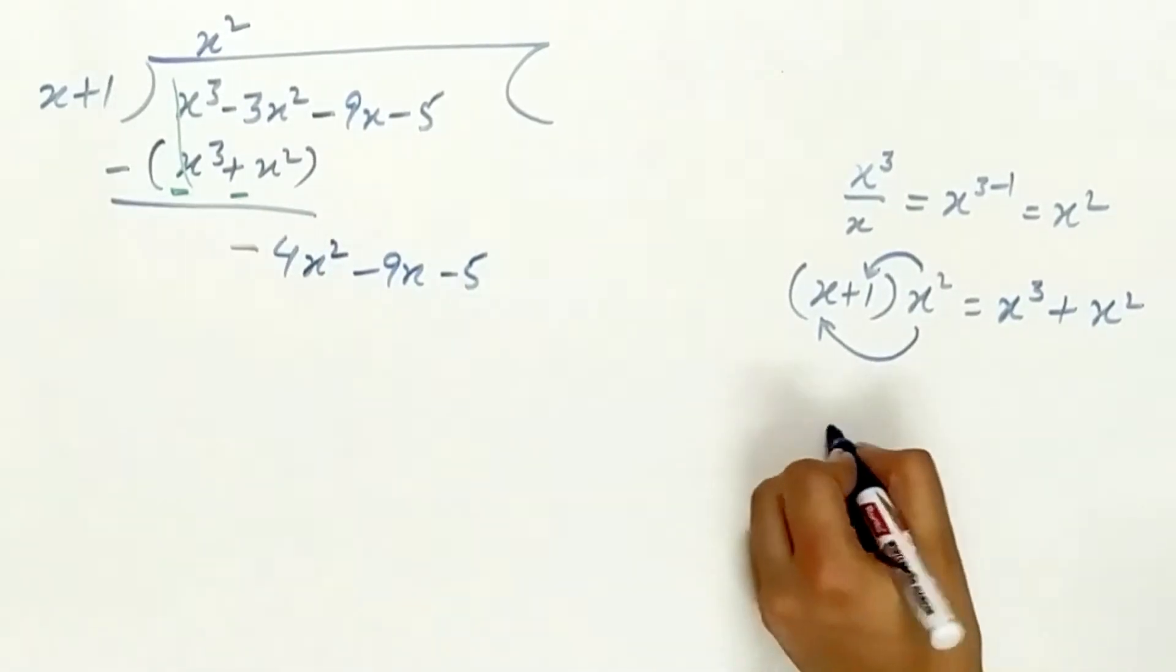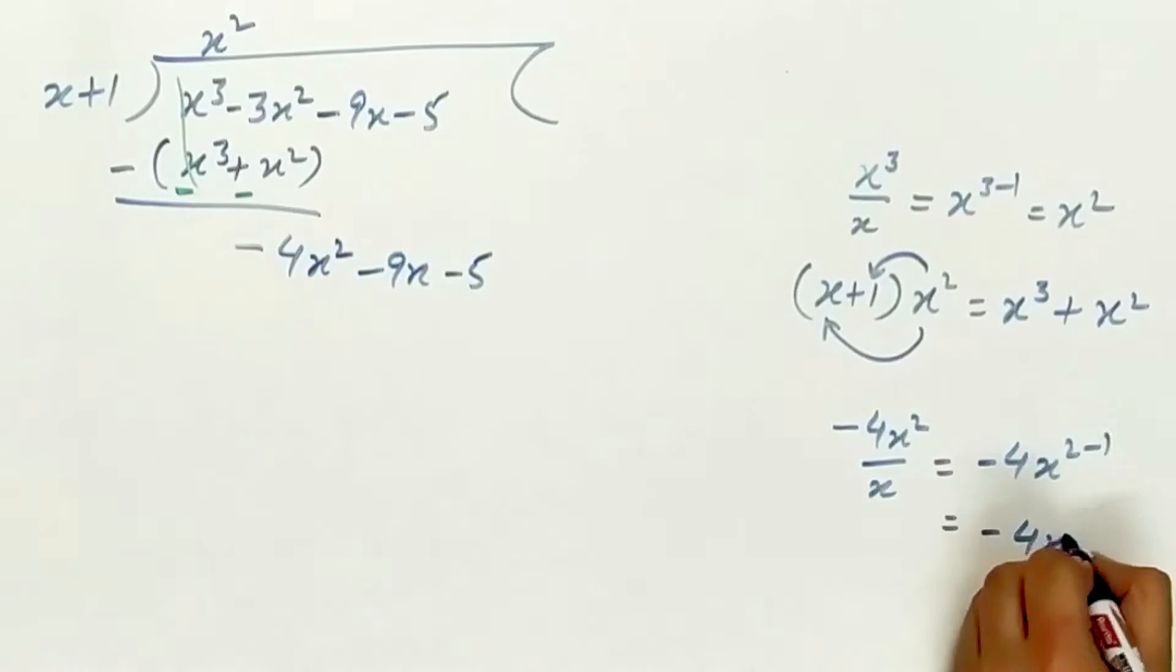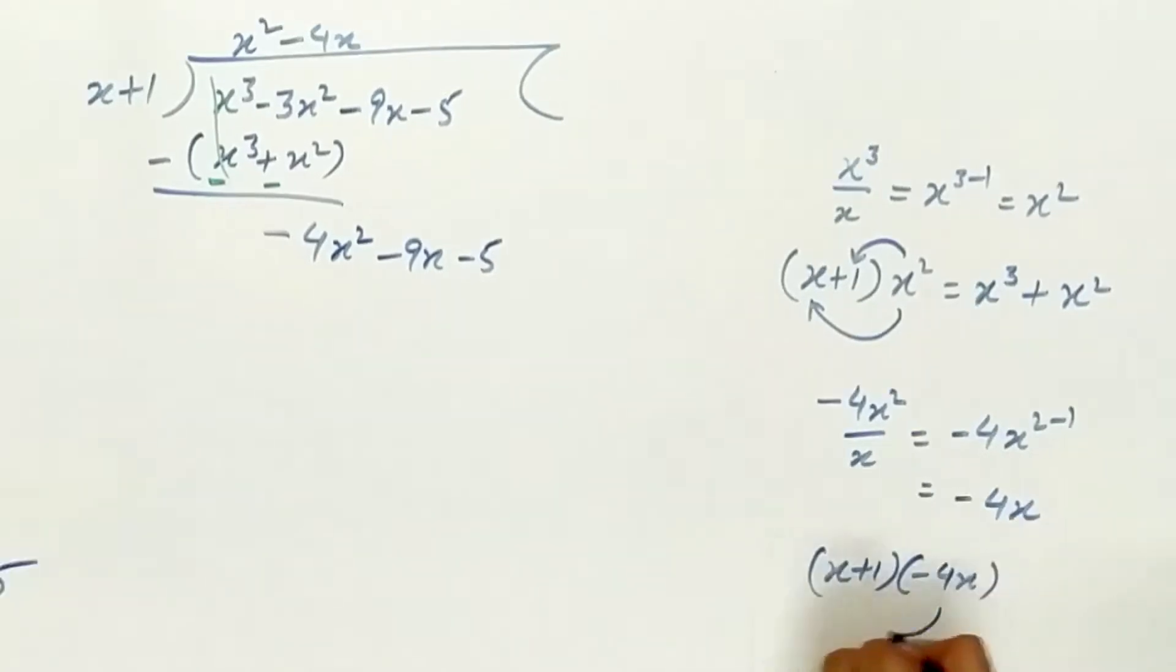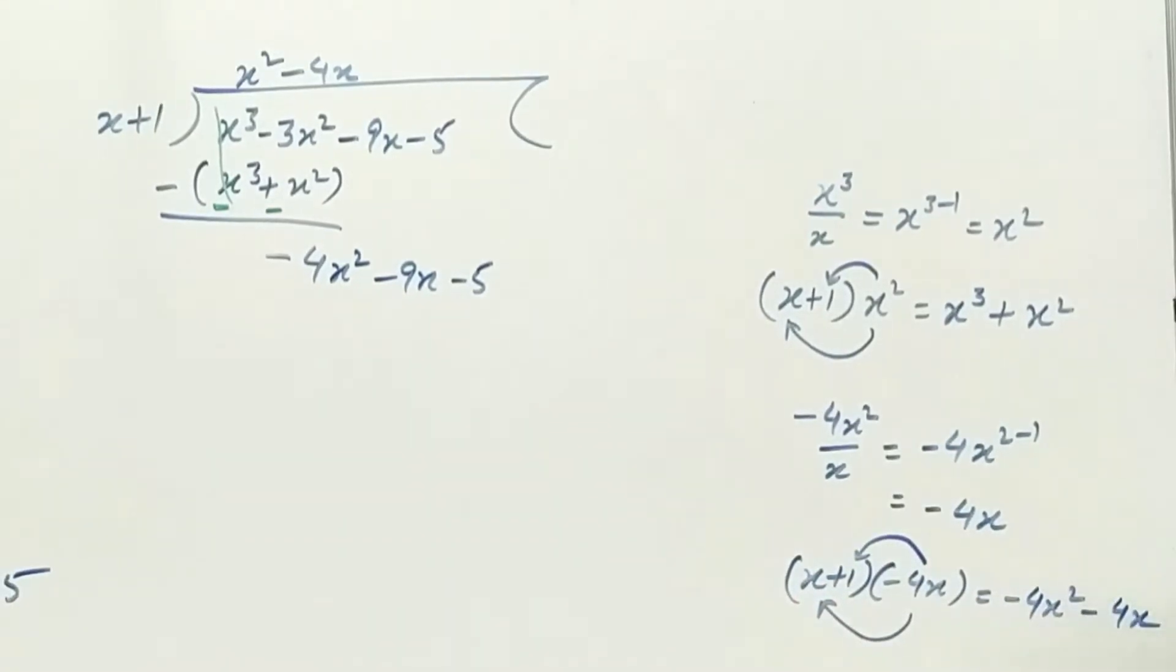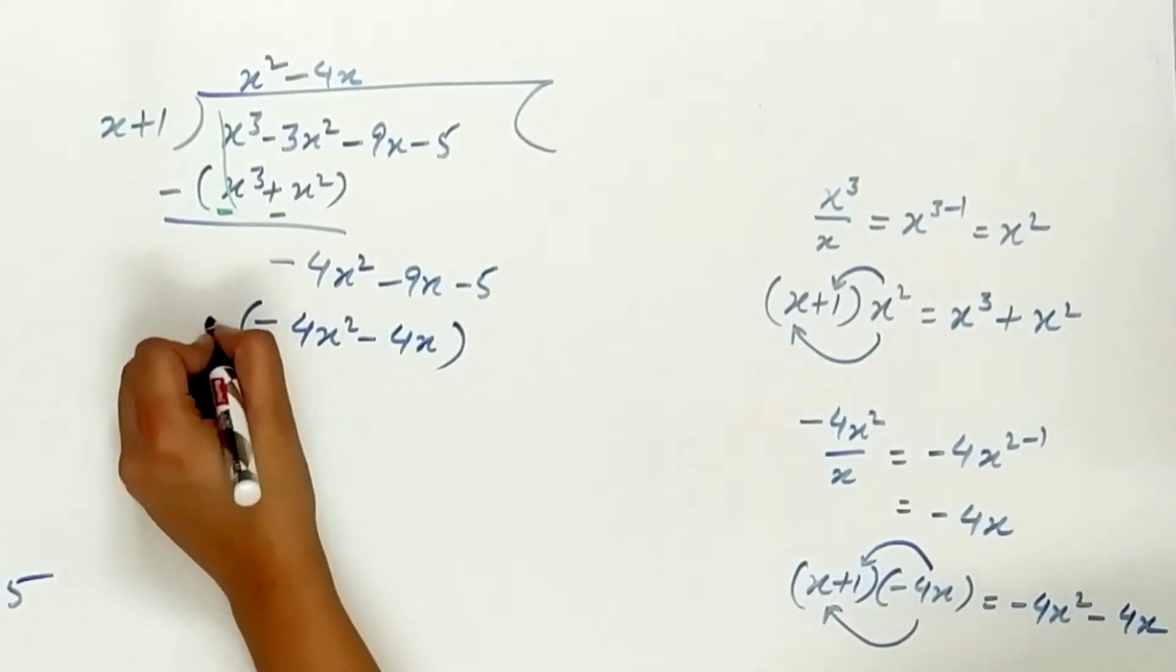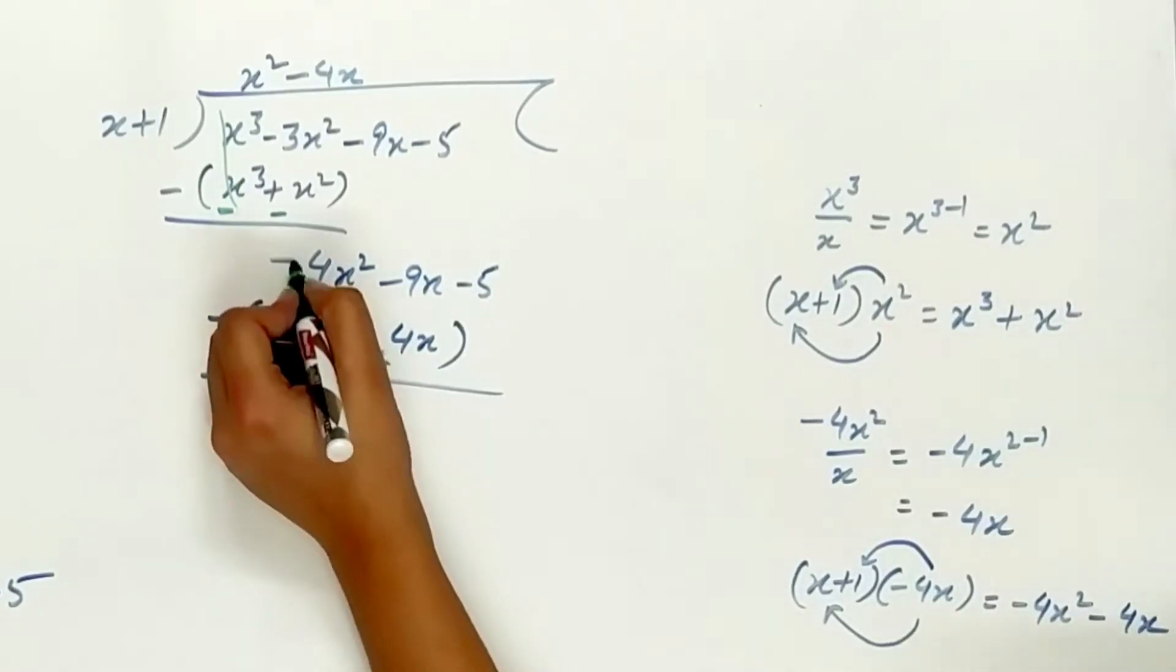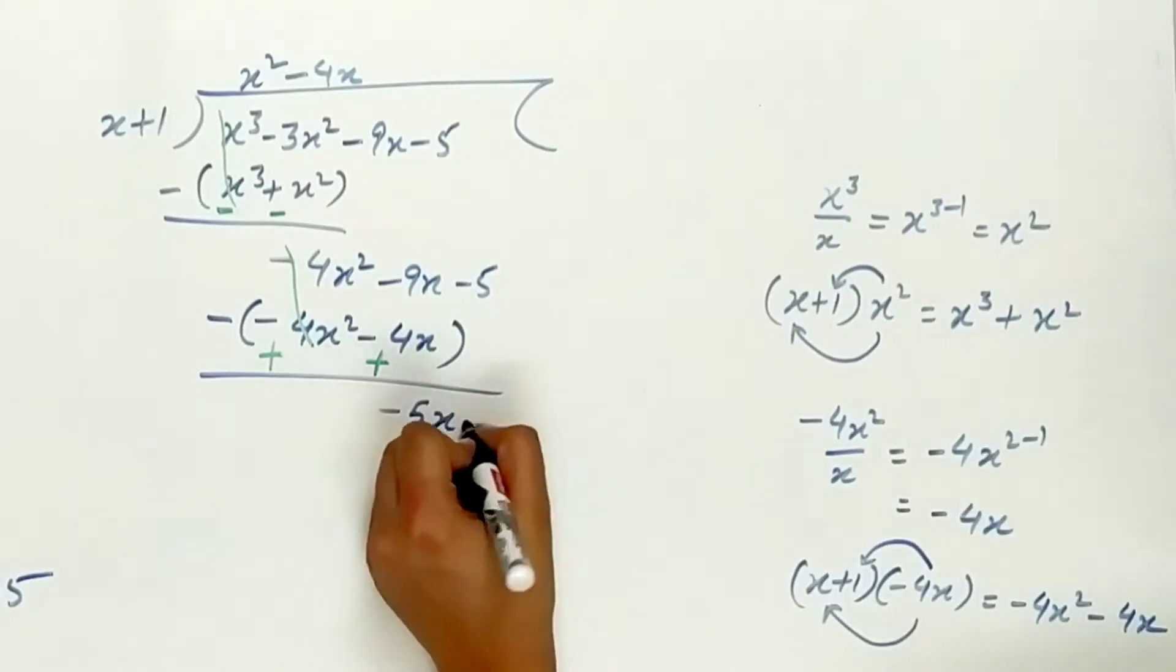Divide minus 4x square by x, which is equal to minus 4x. Minus 4x multiply x plus 1, which is equal to minus 4x square minus 4x. Minus 4x square plus 4x square is zero. Minus 9x plus 4x is minus 5x minus 5.